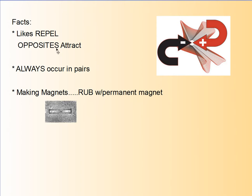Remember, likes repel and opposites attract. Different from electric fields, magnetic poles always occur in pairs. If I were to take a magnet and break it in two, I would get two magnets. I could have a single positive charge or a single negative charge, but I cannot have a magnetic monopole. To make a magnet, one way is to simply rub it with a permanent magnet, and that aligns the domains, like we discussed before.